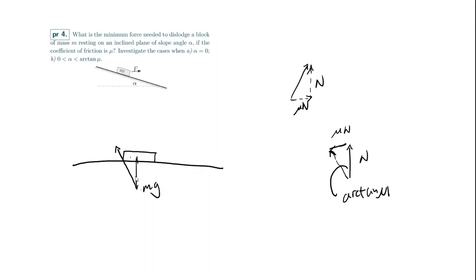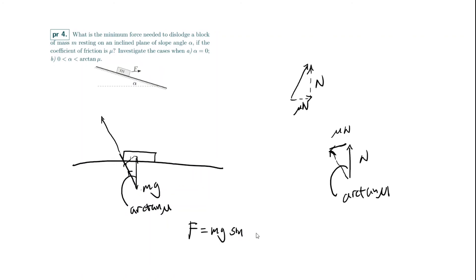The combined reaction force (normal + friction) makes angle arctan(μ) with the vertical, and it's parallel to mg in direction sense. Just before dislodging, the net force on the block is zero, so the applied force F must cancel the vector sum of mg and the reaction. To minimize F, apply it perpendicular to the reaction vector. The minimum force is then F = mg · sin(arctan μ) = mg · μ / √(1 + μ²).